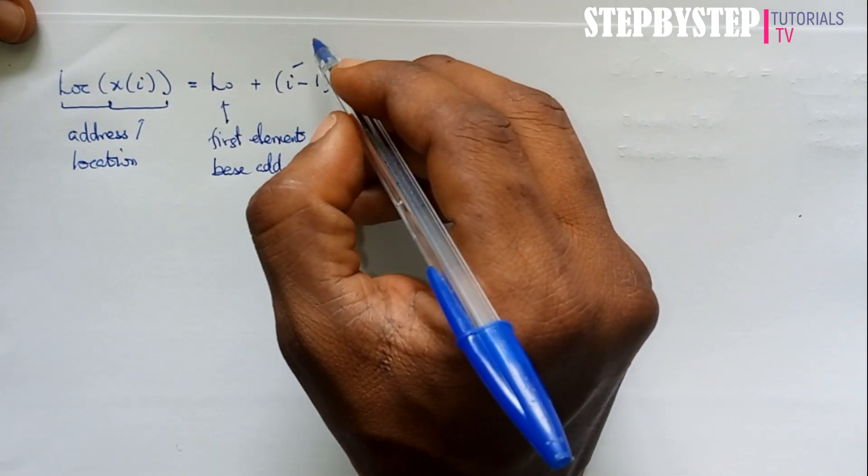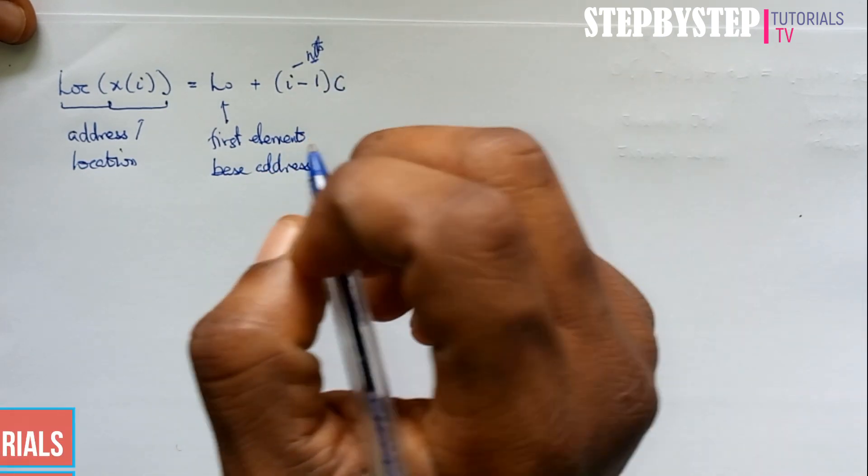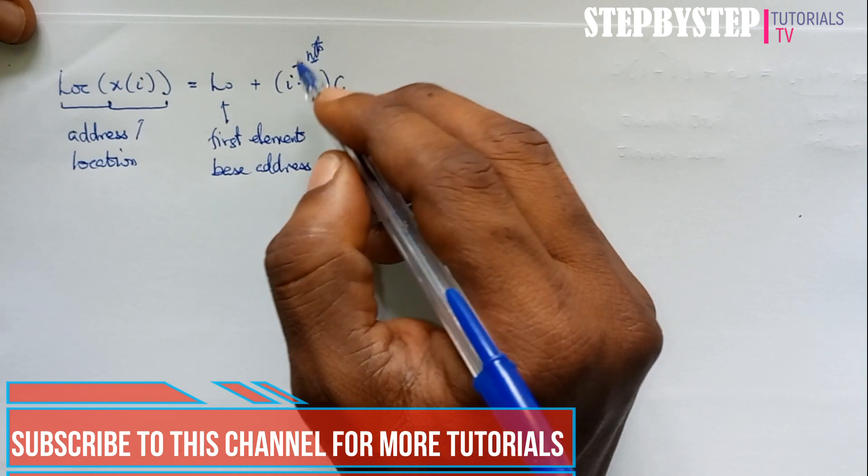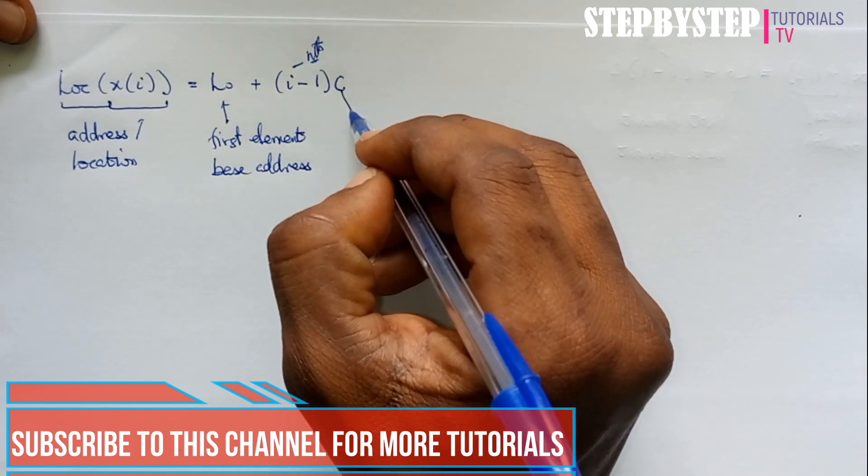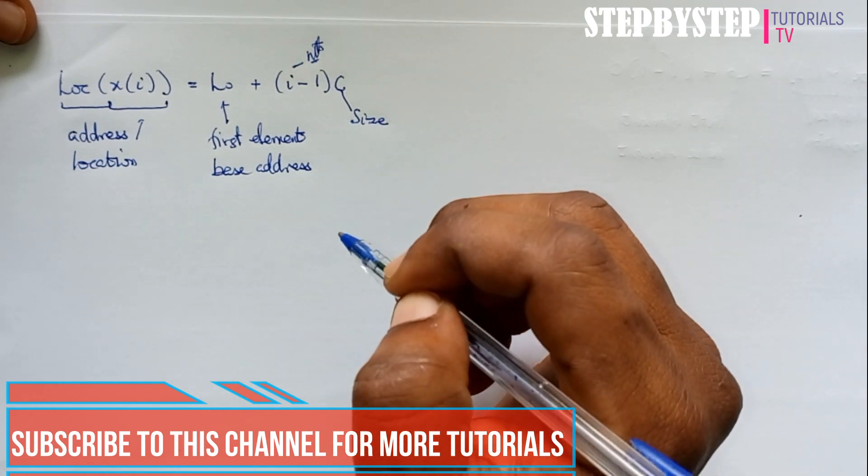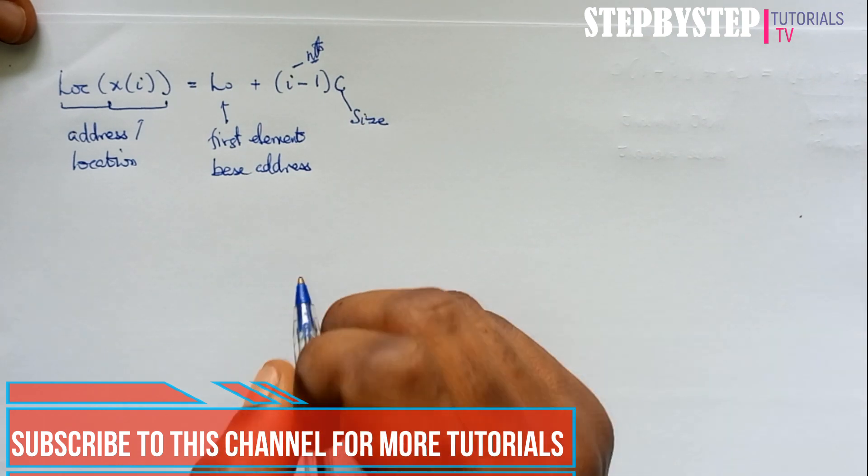Then we add I, which represents the nth position, that position of that particular item, minus 1, all multiplied by C, which stands for the size. The size can be in words, in bytes, etc.